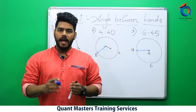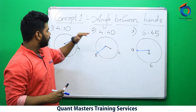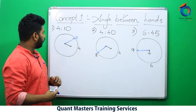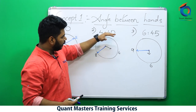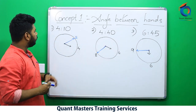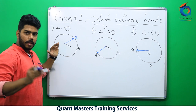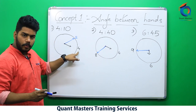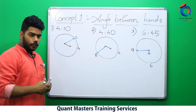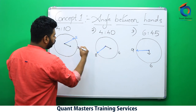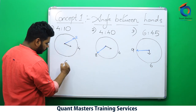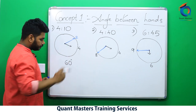Concept number one: angle between the hands. Questions may ask to find the angle between the hands at 4:10, 4:40, or 6:45. At 4:10, the hour hand is pointing at 4 and the minute hand is pointing at 2. So 4 minus 2 is 2 divisions = 60 degrees. Minute hand will be pointing sharp at 2 — correct.